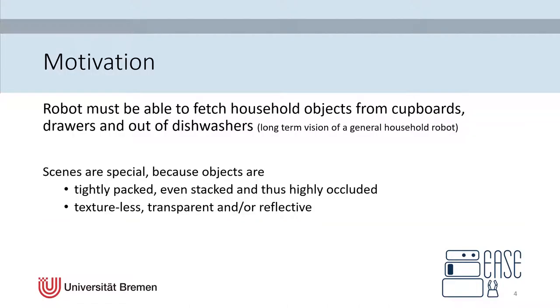A robot must be able to fetch household objects from cupboards, drawers, and out of dishwashers so that it can be deployed in a common household. These scenes are especially hard to detect because in it objects are mostly tightly packed or even stacked and thus highly occluded.